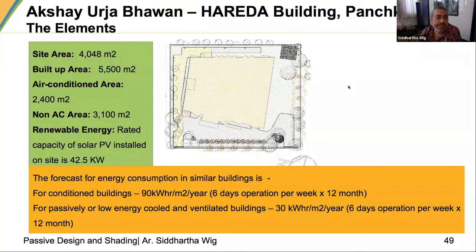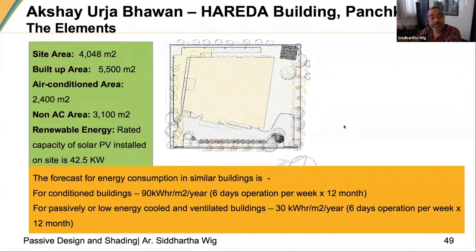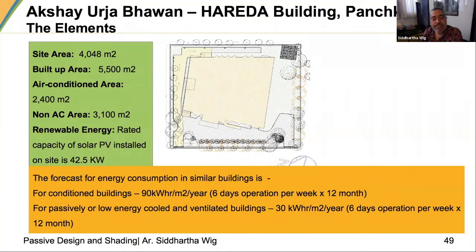It was a national competition with a very interesting brief: the building should not be connected to the electricity grid or water grid at all — the idea was a net-zero building for both water and energy. We started by benchmarking the expected energy consumption: for a conditioned building it was about 90 kWh per square meter per year; for passive low-energy buildings it was about 30 kWh per square meter per year. This was our basic benchmark.